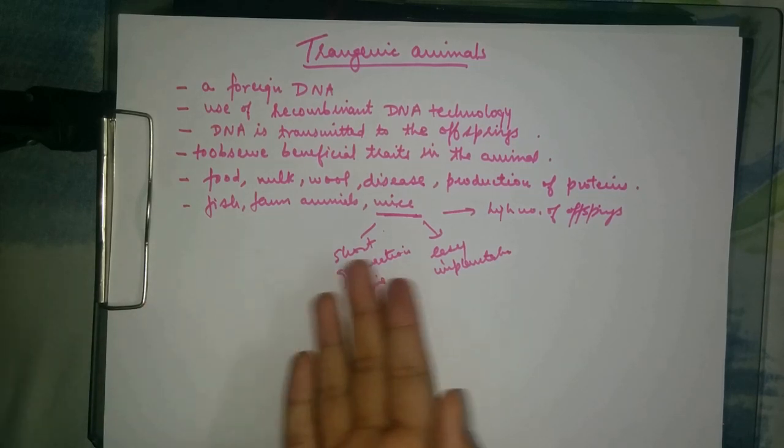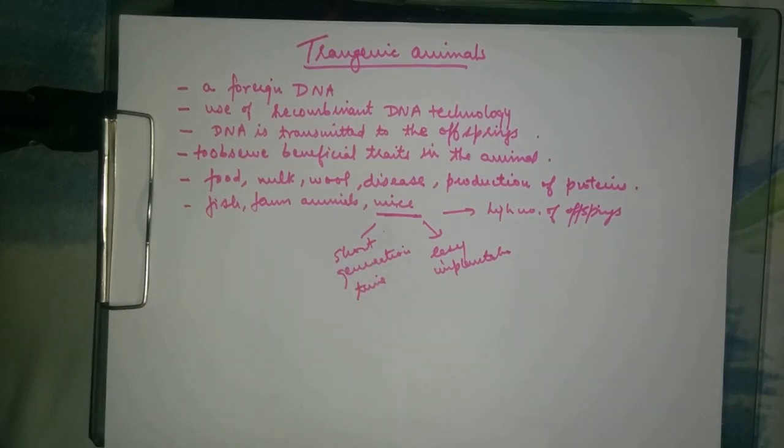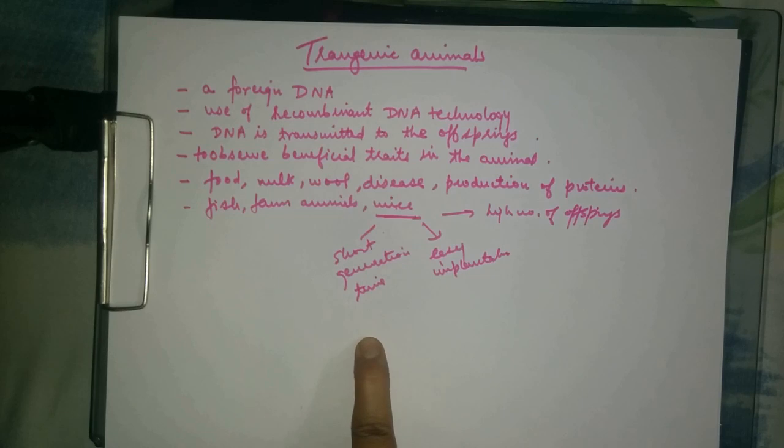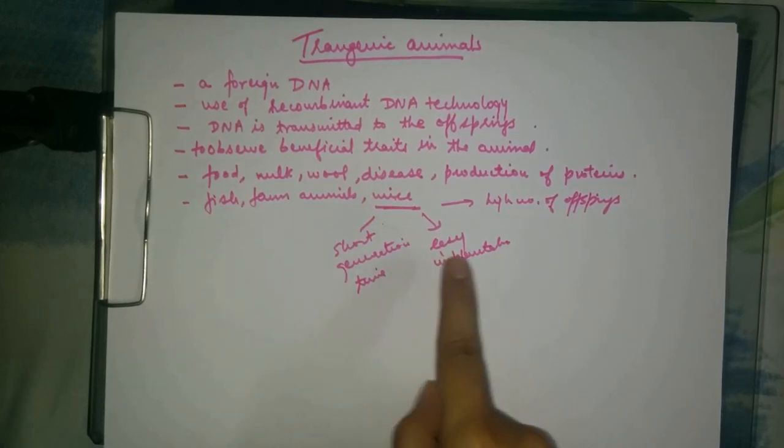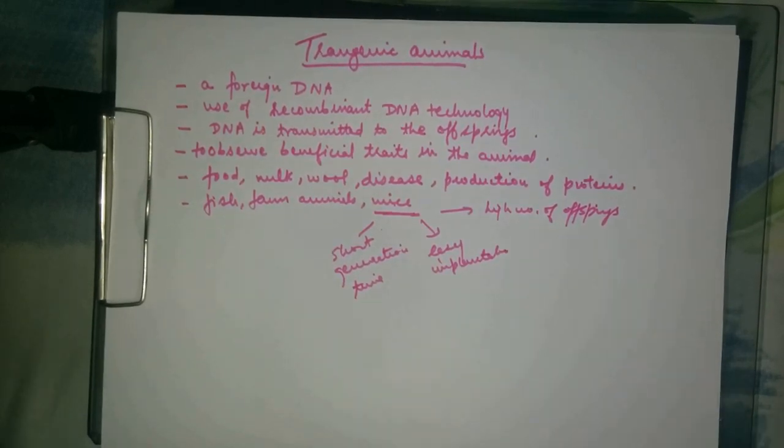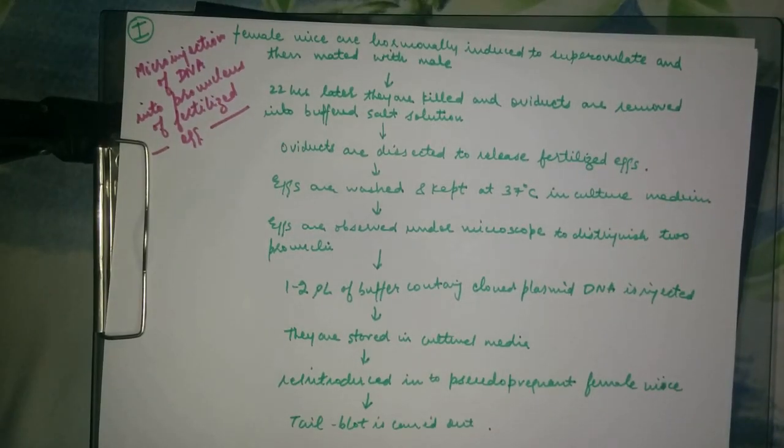We use several animals including fish, farm animals, and mouse. Mouse is the most preferable animal for transgenesis experiments because of its short generation time, easy implantation, and because we obtain high numbers of offspring.